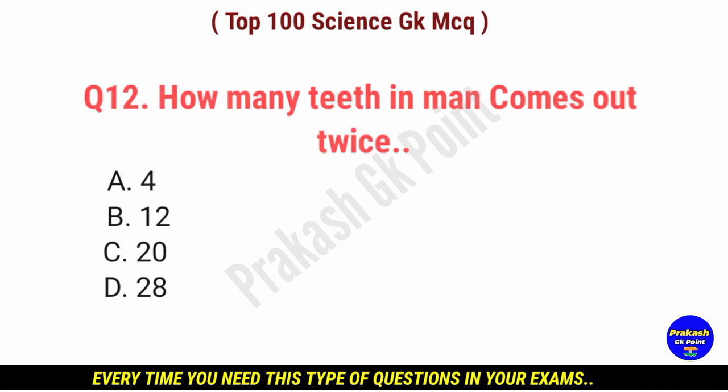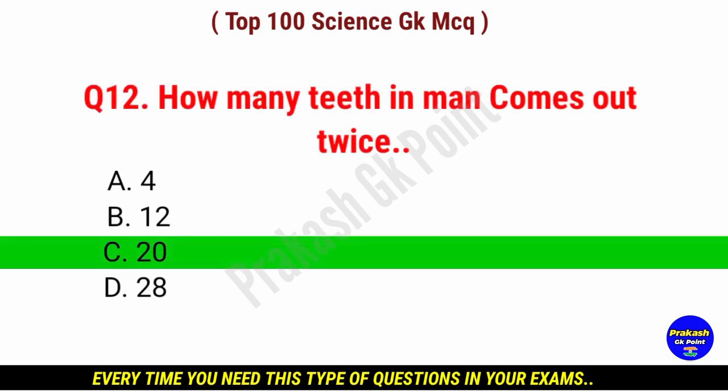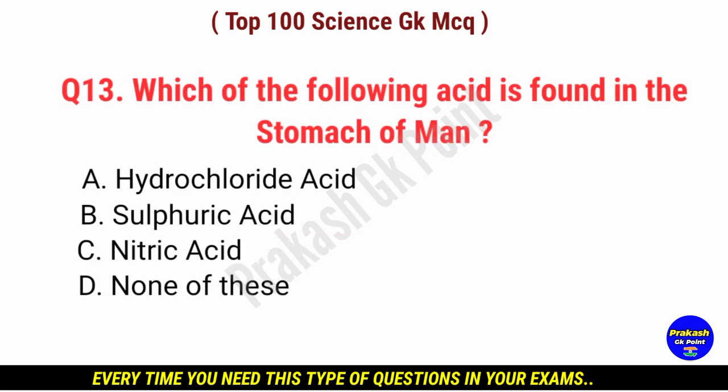How many teeth in a man come out twice? Answer: option C, 20 teeth.